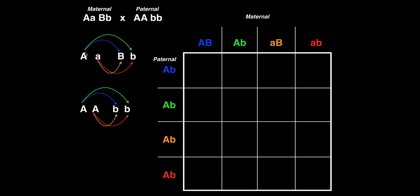Let's start with blue: combine big A with big B — so big A big B is in blue. Then green: big A with little b. Now for little a: orange gives us little a big B, and red gives us little a little b. So I've made every possible combination of the two A's with the two B's. Each of these four combinations represents a possible egg genotype — one egg could be big A big B, another big A little b, and so on. These are the four possibilities for egg genotypes given genes A and B.